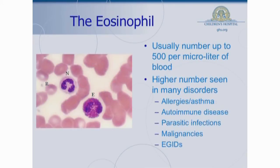Here's an actual picture under a microscope of an eosinophil, and there are actually a couple of different cells there. The little red round cells are red blood cells. The one with the N above it is called a neutrophil, and the one with the E above it is the eosinophil. Normally you have about 500 of these eosinophils or less in a microliter of blood — a millionth of a liter of blood — and when you see higher numbers, that tends to suggest something else going on.